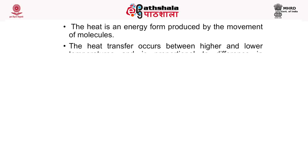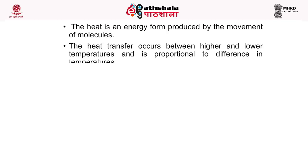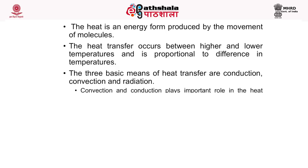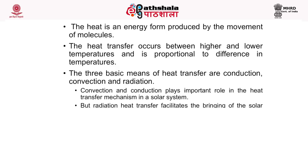The principles of solar thermal technology begin with heat, which is an energy form produced by the movement of molecules. Heat transfer occurs between higher and lower temperatures and is proportional to the temperature difference. The three basic means of heat transfer are conduction, convection, and radiation. Convection and conduction play an important role in the heat transfer mechanism in a solar system, while radiation heat transfer brings solar energy to the earth in the form of electromagnetic spectrum.